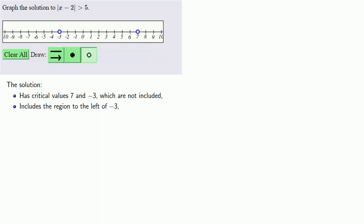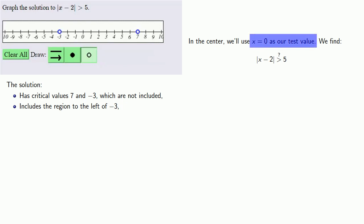In the center, we'll use x = 0 as our test value. Is it true that |x - 2| > 5 when x = 0? We'll replace and simplify.